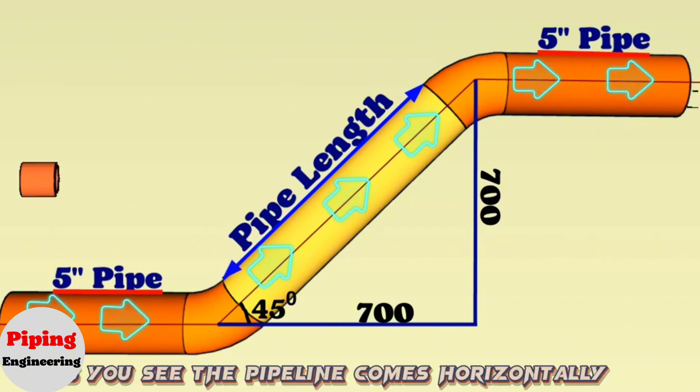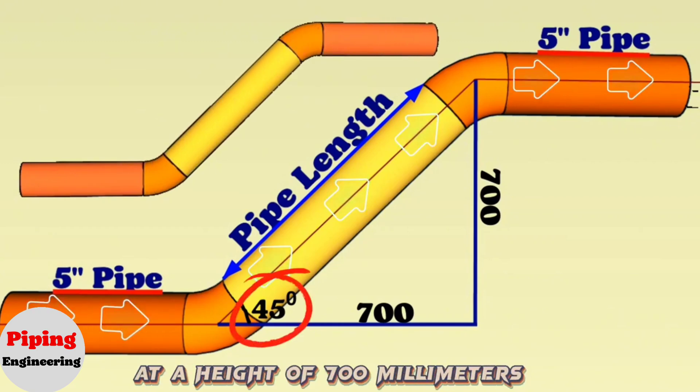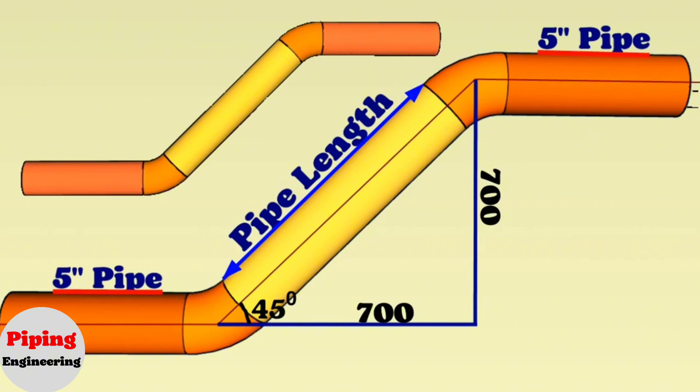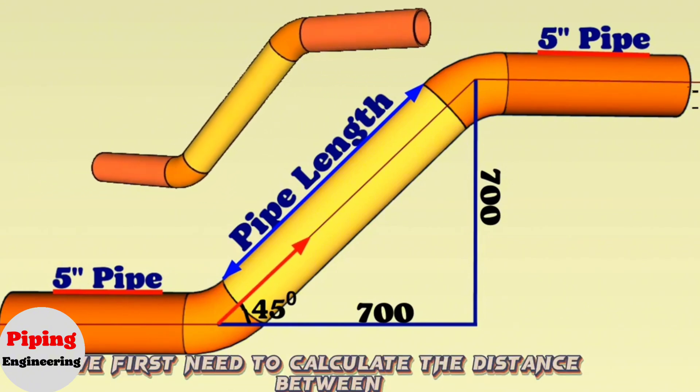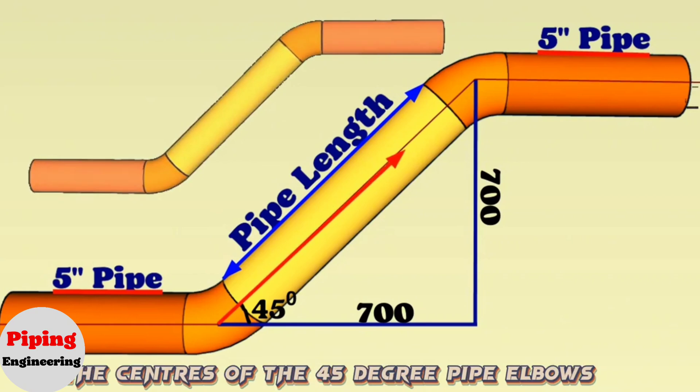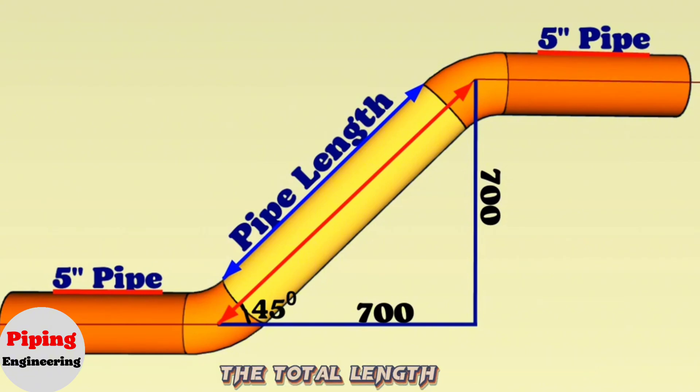As you see, the pipeline comes horizontally, then goes up at a 45-degree angle and continues horizontally again at a height of 700 millimeters. To find the length of the yellow pipe piece, we first need to calculate the distance between the centers of the 45-degree pipe elbows, then we can find the length of the yellow pipe by subtracting the lengths of these two elbows from the total length.